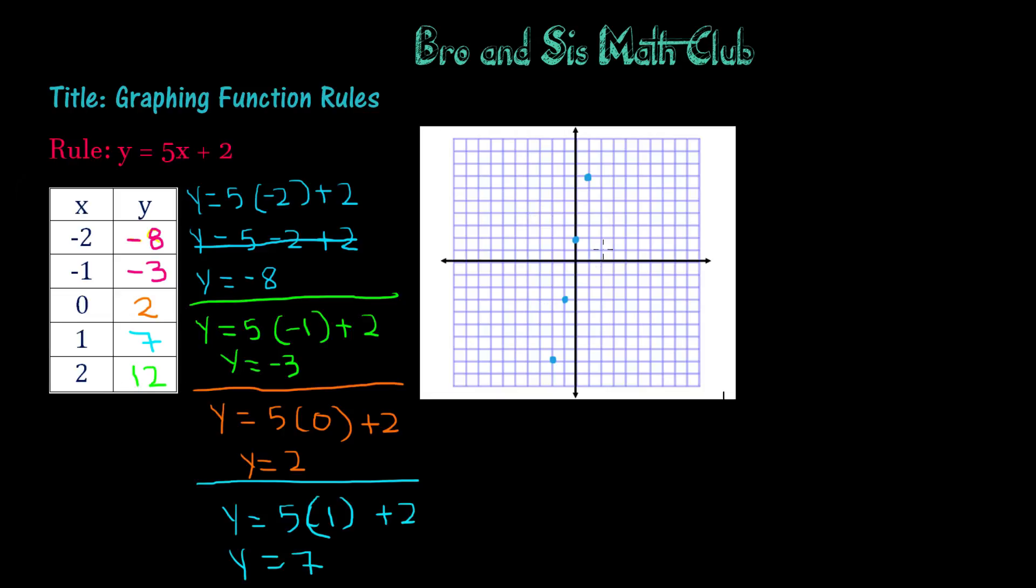And then lastly, we have 2, 12. And I don't think this graph has that many. It only goes up to 10, so we're going to have to extend it. So we'll say that this is 11 and that's 12. So we will have 2, 12, which will be right here.